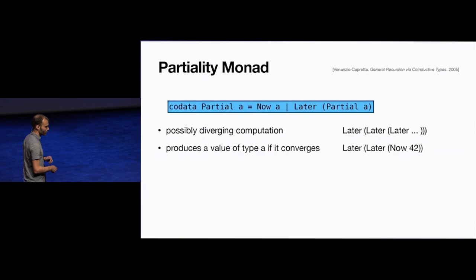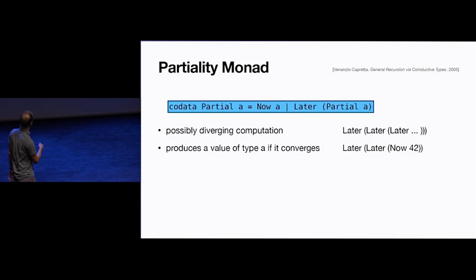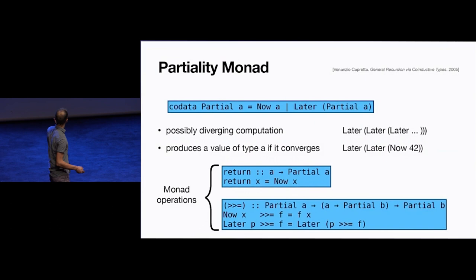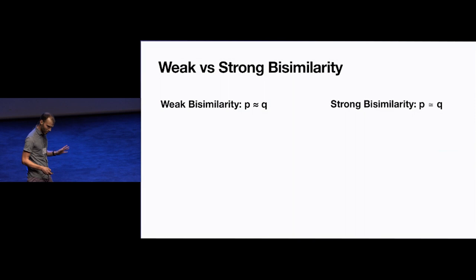What is the partiality monad? It is a coinductively defined type with two cases: the `now` case, which returns a value of type A, and we can also defer a computation by one additional time step with `later`. We can do this indefinitely because it's coinductively defined, giving us diverging computations. We can give this type monad operations `return` and `bind`, which satisfy the monad laws up to bisimilarity.